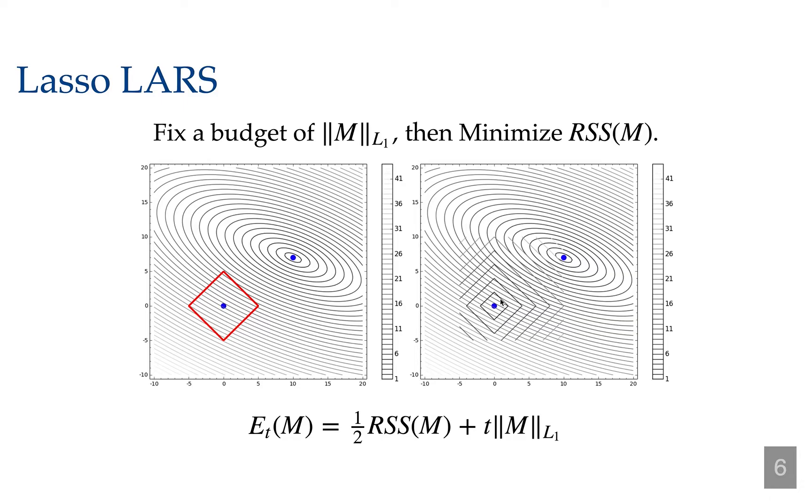On the other hand, one can think about both the residual sum of squares quadratic error and the L1 norm as playing off of each other, and you can imagine balancing which one is more important.